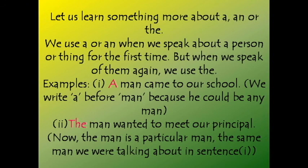We use a or an when we speak about one person or one thing for the very first time. But when we speak about them a second time, third time, or in succeeding mentions, we use the. For example, a man came to our school — we use a before man because it is not particular and it is the first mention. Then: 'The man wanted to meet our principal' — here we use the because we are talking about that particular man who came to our school.